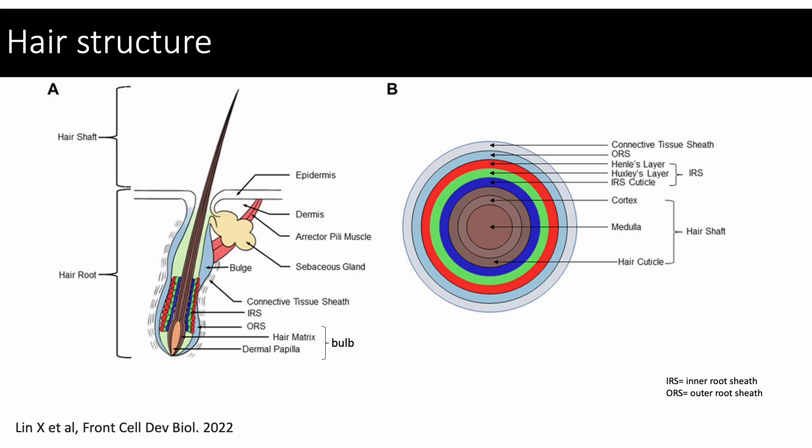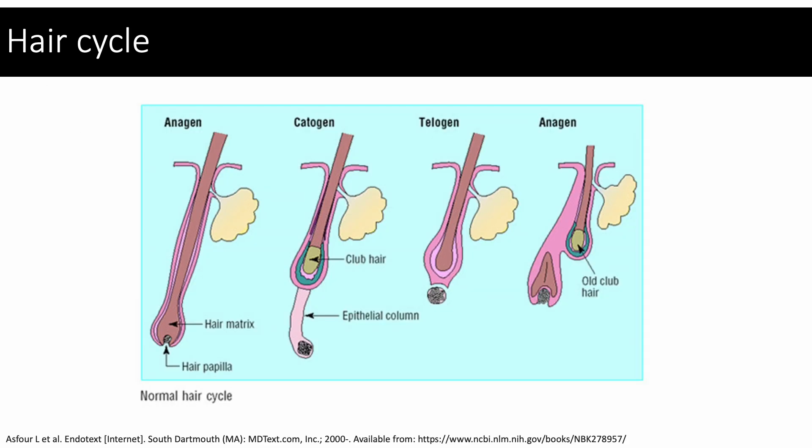The inner root sheath coats and supports the hair shaft. The outer root sheath provides a slippage plane, nutrition, regulatory molecules, and stem cells. The hair cycle is an autonomous phenomenon, though it can be modulated by numerous systemic or extra-follicular factors.